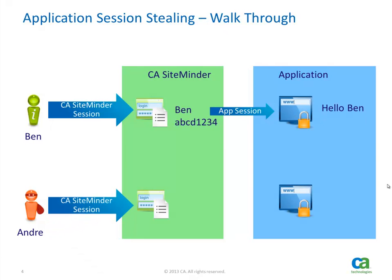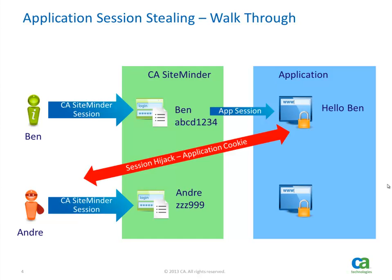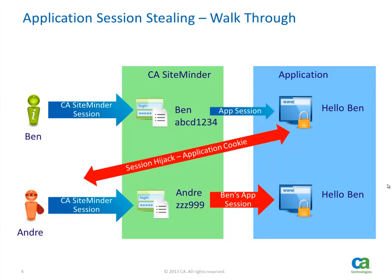Our attacker, Andre, who is a bad guy, comes in and logs into CA SiteMinder using his own credentials and is granted a SiteMinder session. Once logged into SiteMinder, Andre steals Ben's application cookie and then replays it. The application sees a valid session, so it reads the identity from the application cookie, which contains Ben's identity, and displays Ben's data.